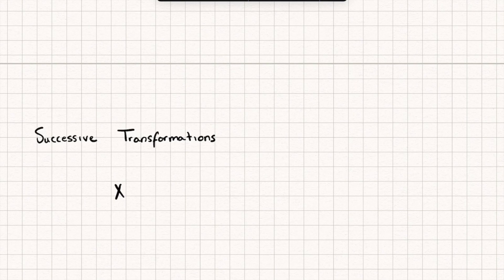Now this could be a point, it could be a shape, it could be any matrix. And what I'm going to do is transform it by a matrix A, multiply it on the left by the matrix A. Now I'm going to take the answer to this, whatever this is, the new transformed shape or point or whatever.